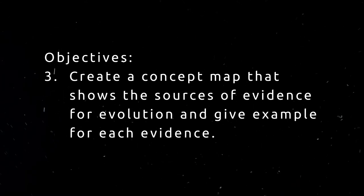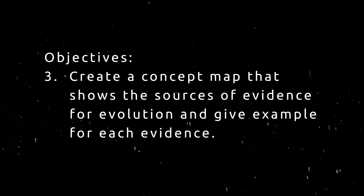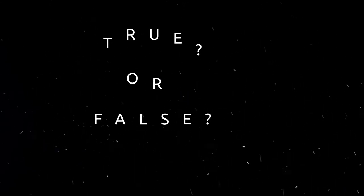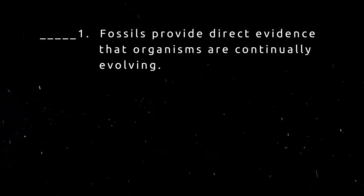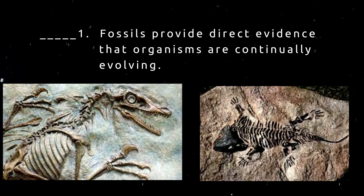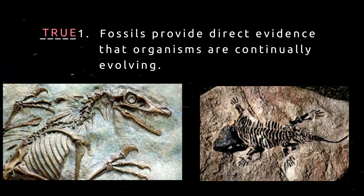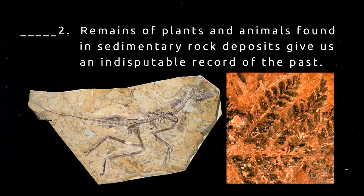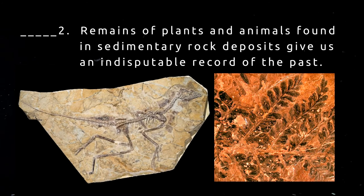In the following statements, you will determine whether the statements are true or false. For number one, fossils provide direct evidence that organisms are continually evolving — this statement is true. Number two, remains of plants and animals found in sedimentary rock deposits give us an indisputable record of the past — this is also a true statement.